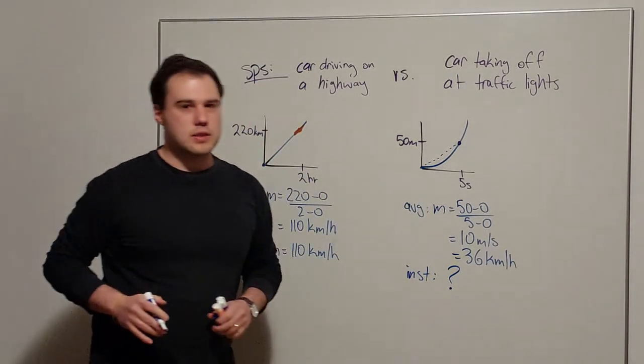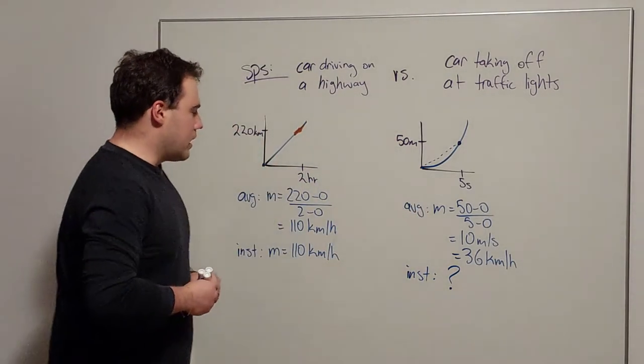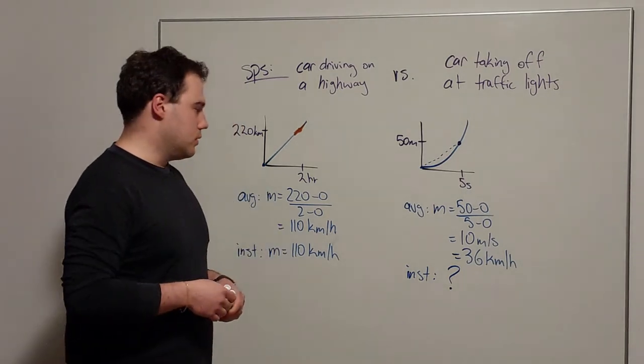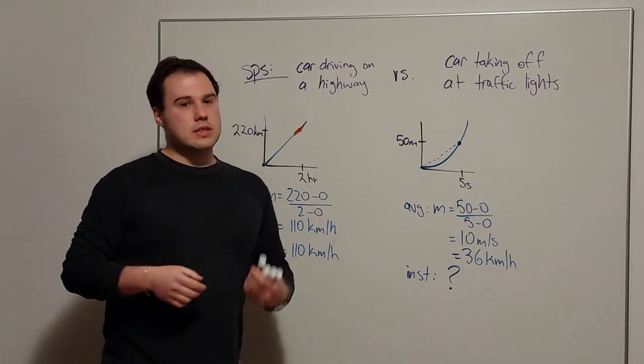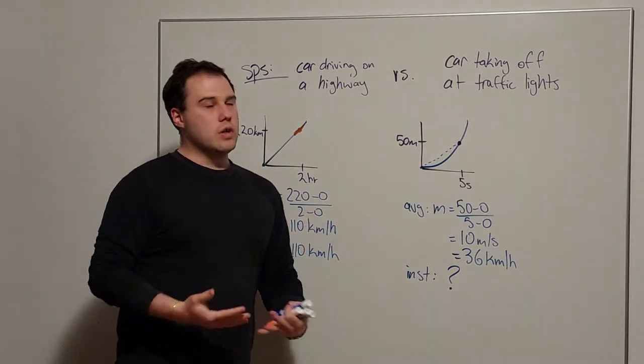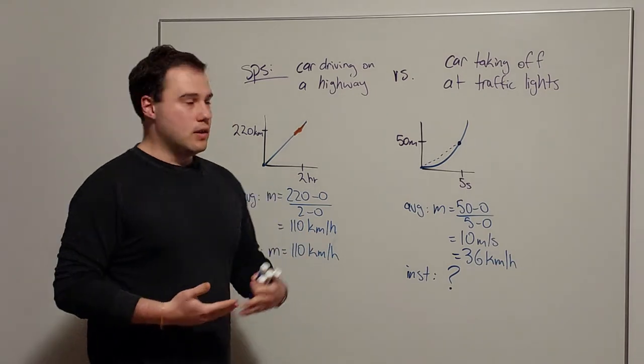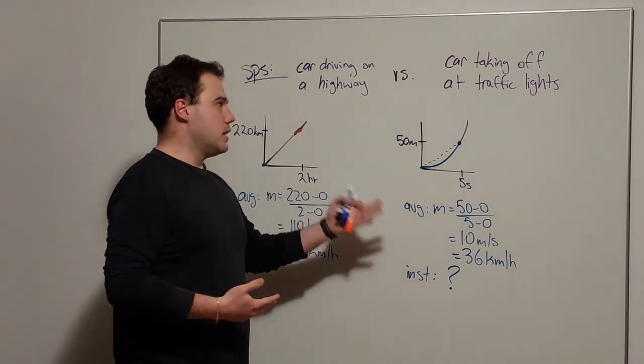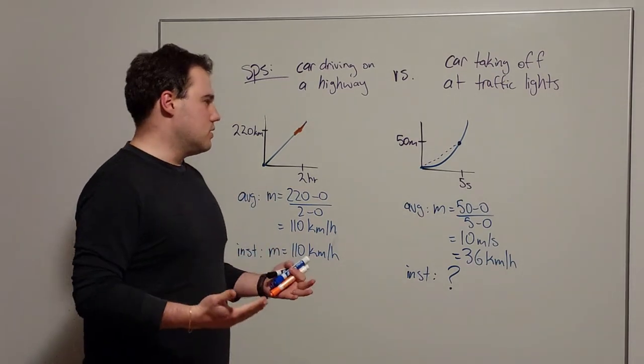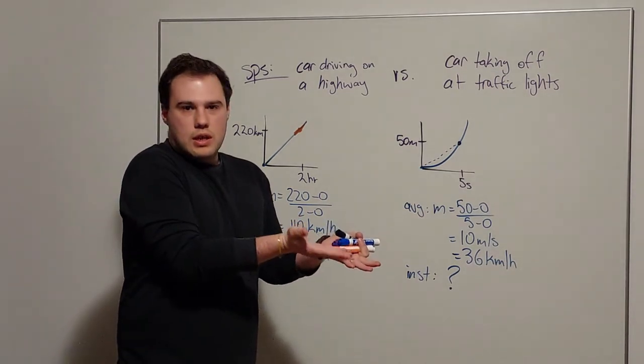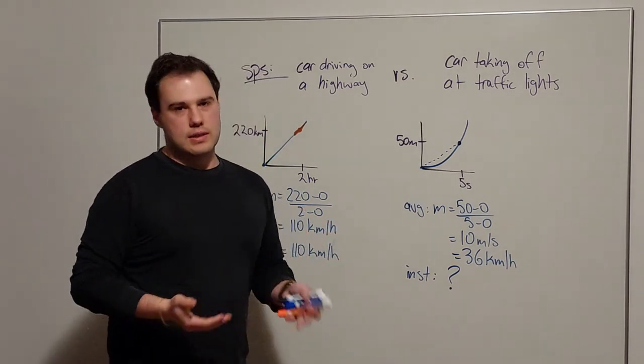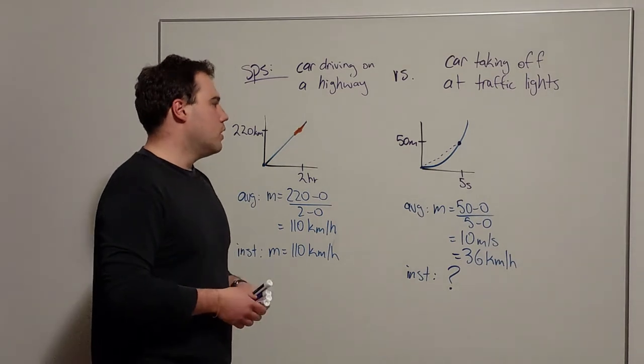So the instantaneous speed we don't know. Okay, so this is what calculus is going to enable us to answer: what is the instantaneous speed? So contextually, what is the speedometer reading on the car which has taken off at the traffic lights with constant acceleration? What's the driver seeing after five seconds on this speedometer? It's not 36 k's an hour, it's something higher. So that's the specific context, but we could strip away this context.